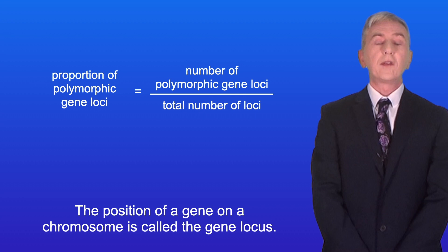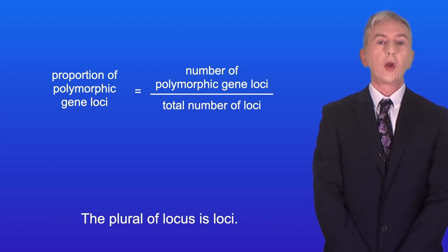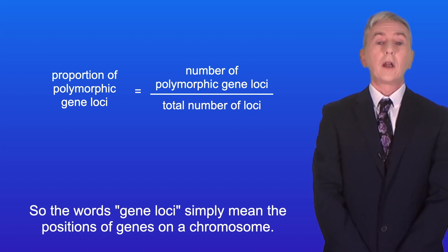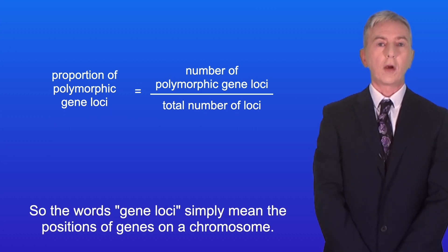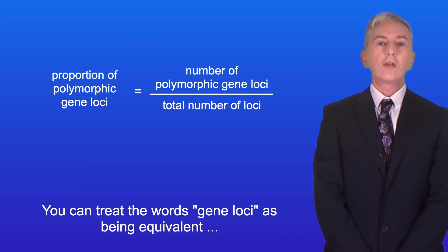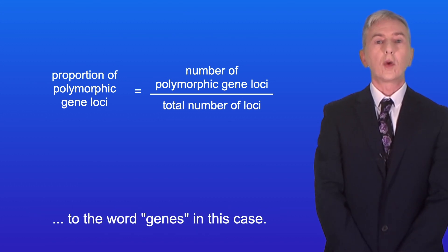The position of a gene on a chromosome is called the gene locus, and the plural of locus is loci. So the words gene loci simply mean the positions of genes on a chromosome. You can treat the words gene loci as being equivalent to the word genes in this case.